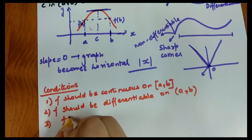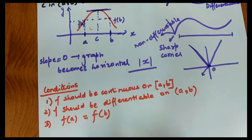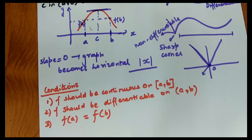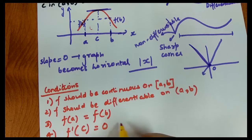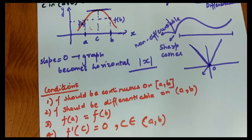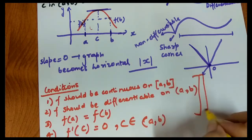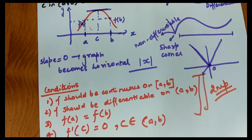The third condition is that f(a) should equal f(b). If these three conditions are satisfied, we check the fourth condition. If they are not satisfied, the theorem is not applicable. The fourth condition is that a point c exists in (a, b) such that f'(c) = 0.